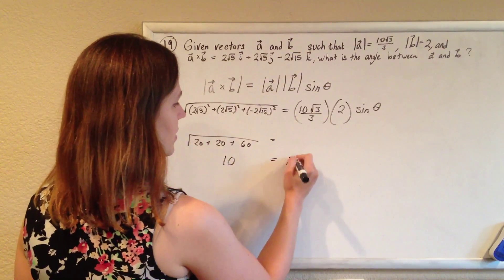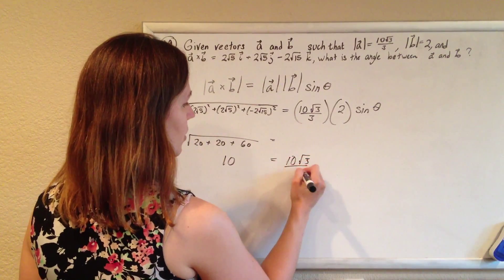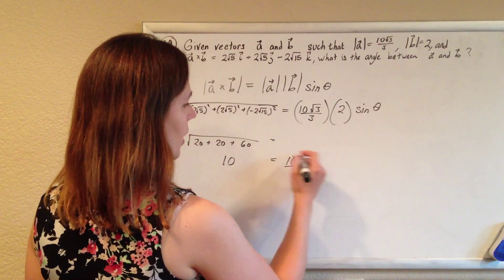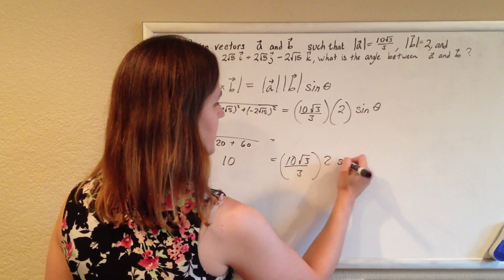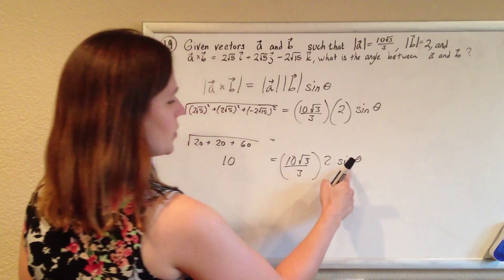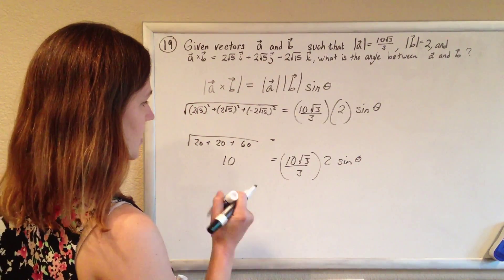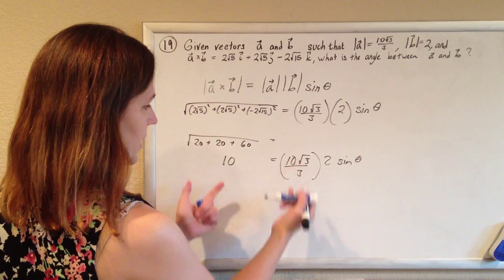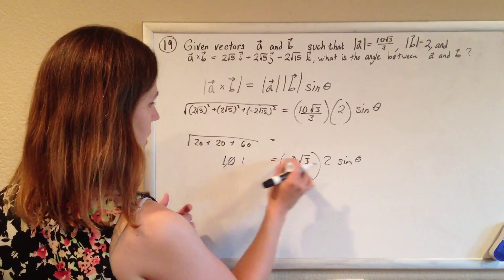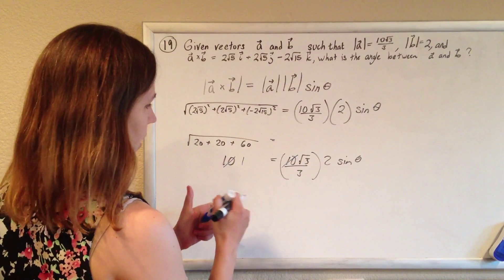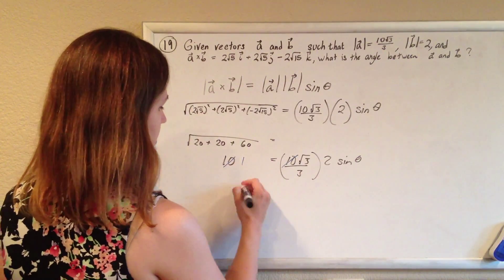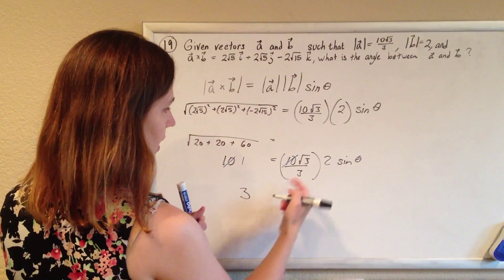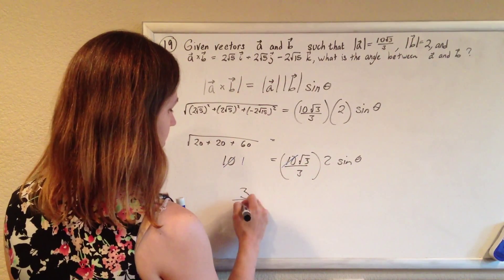So 10 is supposed to be 10 root 3 over 3 times 2 times the sine of theta. To solve for the sine of theta, I'm just going to divide both sides by 10, which will make this a 1 and make that go away. Multiply both sides by 3, so we'll make 3, and then divide by 2 root 3.